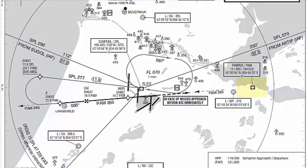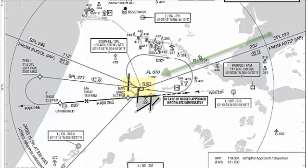So let's start our approach from AIRTRIP, which is also our initial approach fix. From there, we will fly from an altitude of 7000 feet and track the inbound course 250 to Skibole VOR. Once we pass Skibole VOR, we will track our outbound course, roughly 265 degrees.